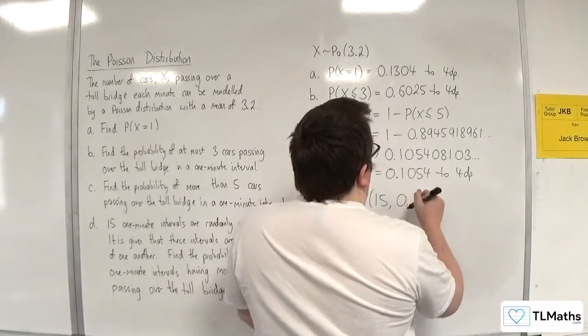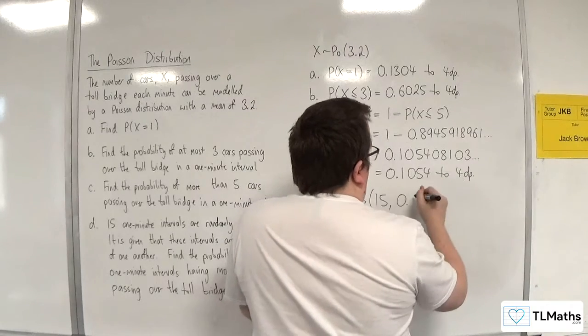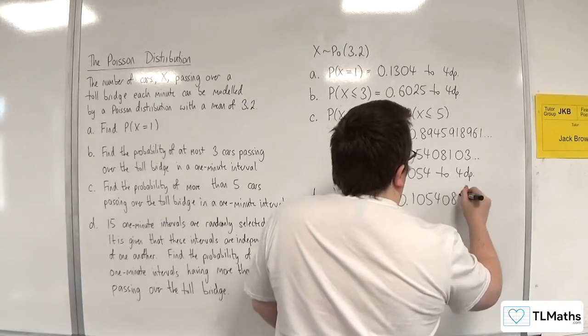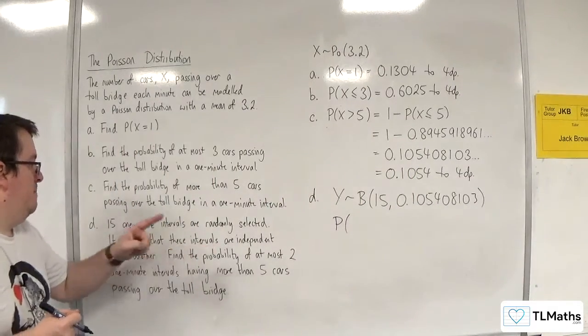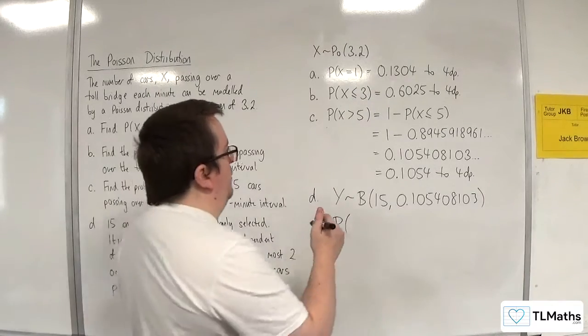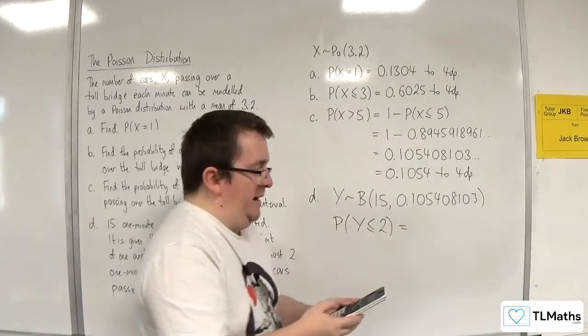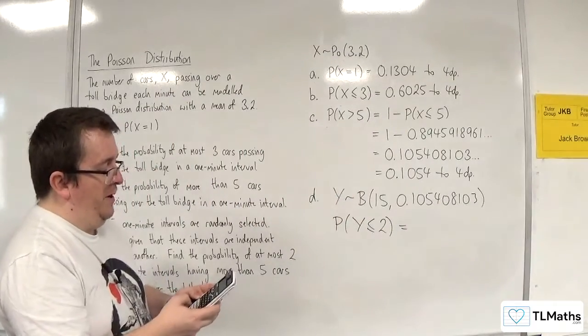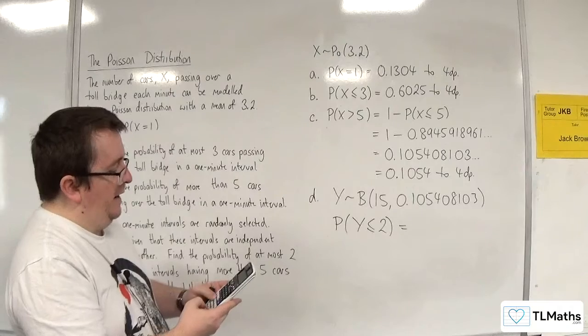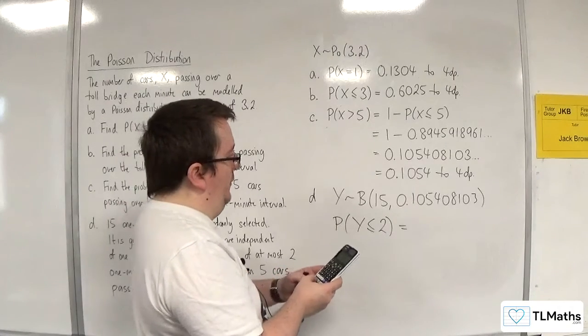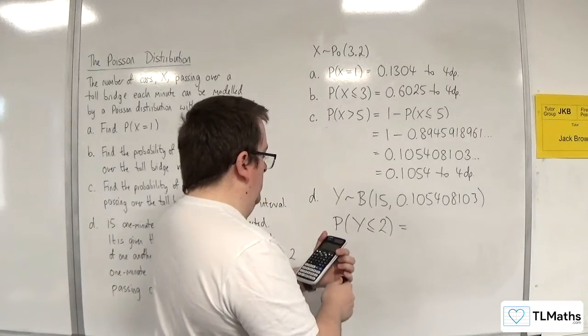Now to make sure that my answer is correct to 4 decimal places, I'm not going to use that value. I'm going to use 0.105408103. And I want the probability of at most 2 one-minute intervals, so at most 2 is less than or equal to 2. So we want to go to menu number 7, scroll down to binomial CD, go to variable, put the x in as 2, n is 15, and the probability 0.105408103. We're getting 0.7947 to 4 decimal places.